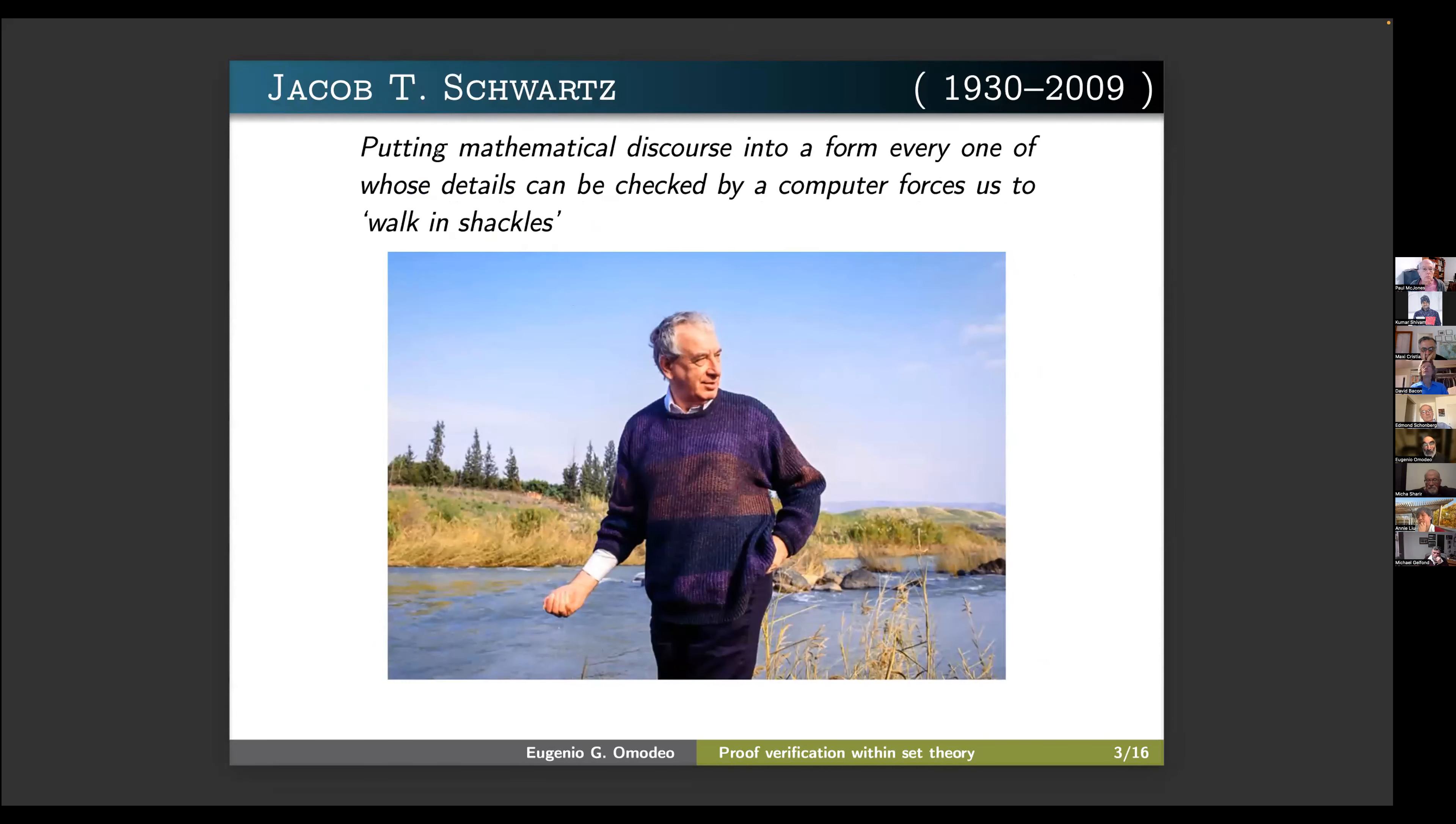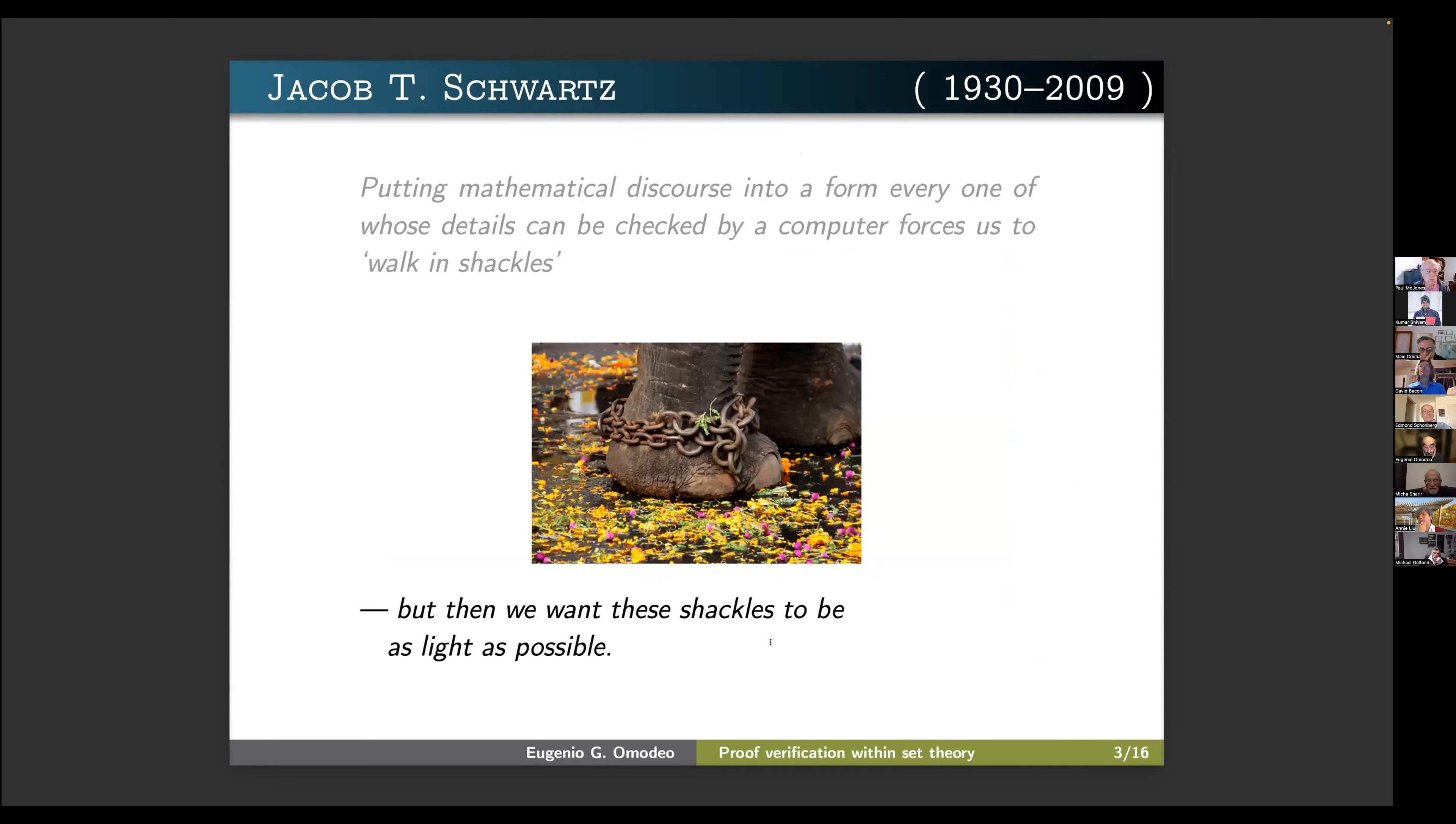Here is Jack, who said that putting mathematical discourse into a form, every one of whose details can be checked by computer, forces us to walk in shackles. But then we want these shackles to be as light as possible. And in fact, this has been a long effort in the design of the proof checker, because essentially, in order to be acceptable for a mathematician or for a computer scientist, it could not have overwhelmed its users with the details.